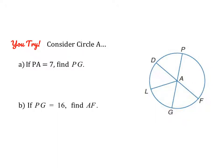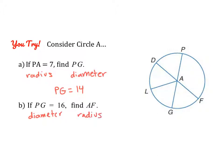Go ahead and pause the video and give this one a try. For the first one, PA is a radius and PG is a diameter. Diameters are always twice as long as the radius, so 7 times 2 is 14. For the second one, the given segment is a diameter and AF is a radius. The radius is always half the size, so 16 divided by 2 is 8.